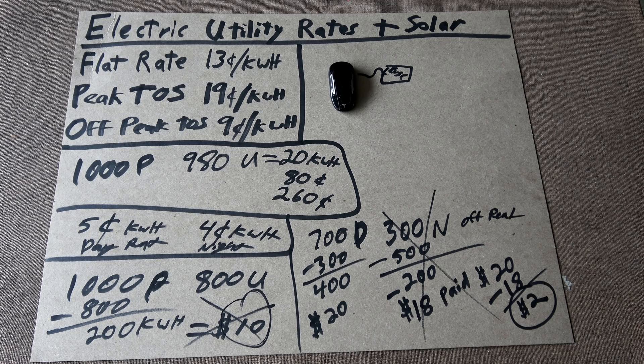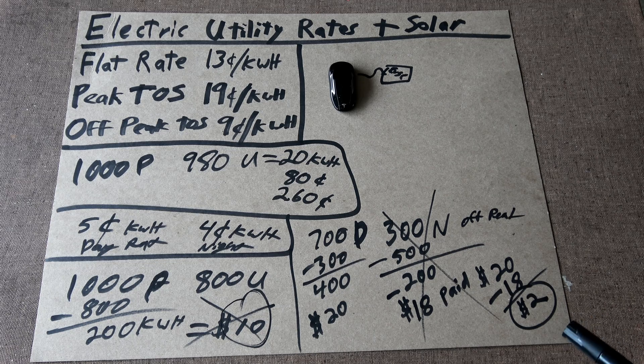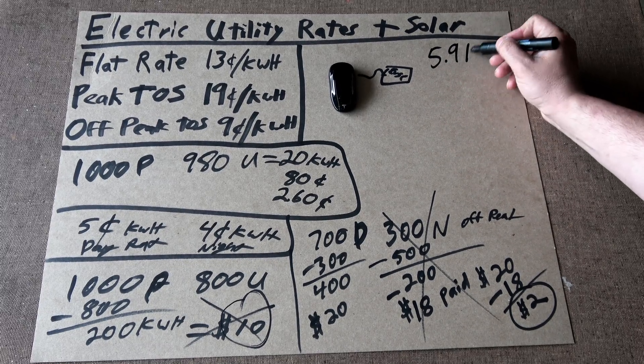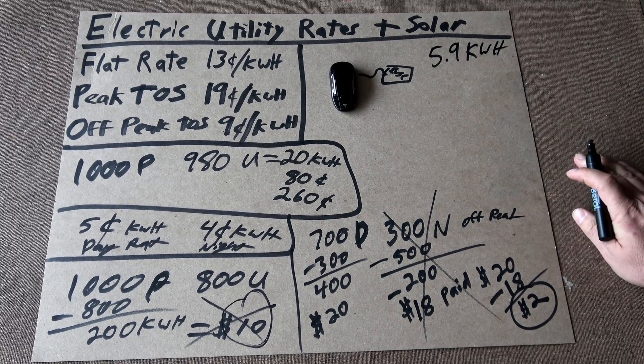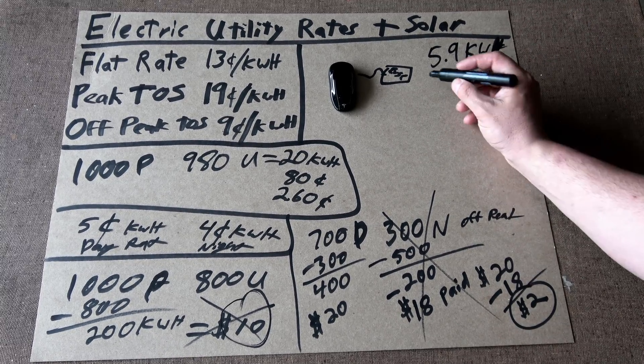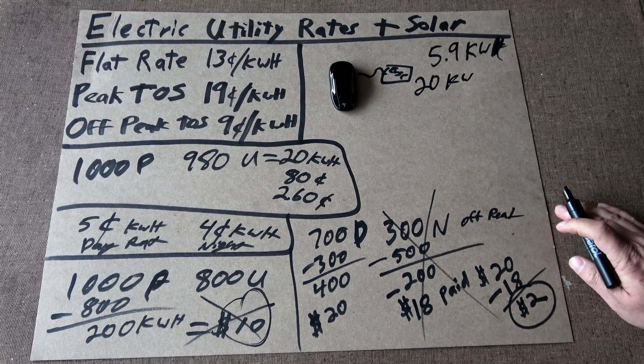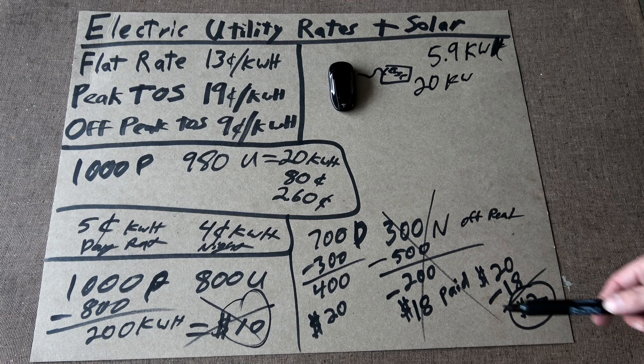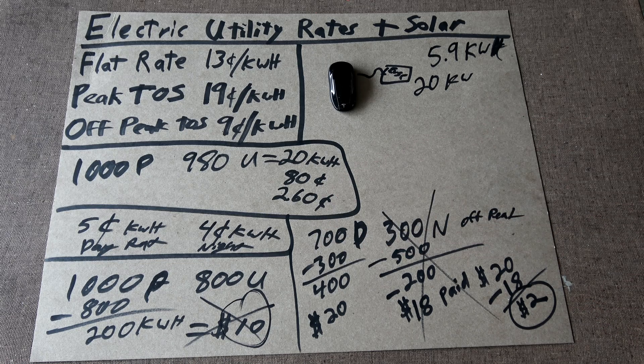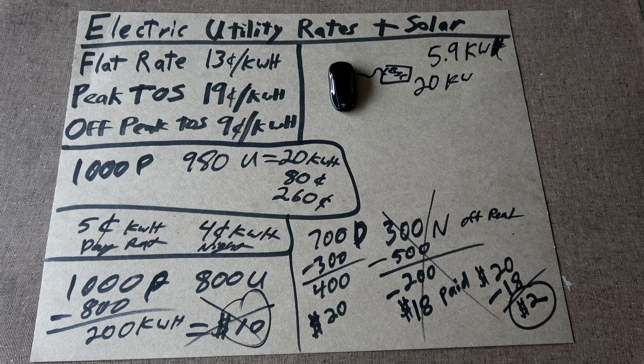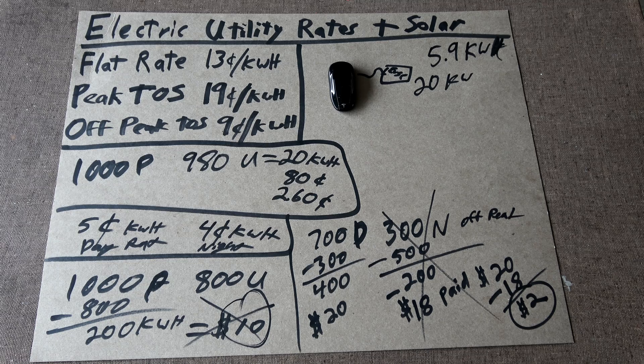Now, the only time this would actually not work out in your favor would be if you had such a giant system. I have a 5.9 kilowatt system. If I had the utility's maximum of a 20 kilowatt system, then I'd be producing enough on the off-peak, just from the weekends, where I'd be able to erase my off-peak usage altogether. This is also where something like a Tesla Powerwall will come in extremely handy.